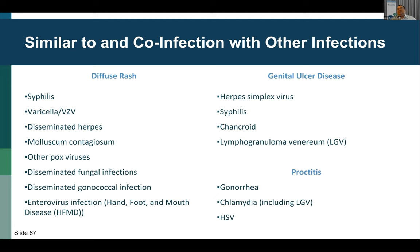Because of these unique and severe presentations, we have to carefully consider our differential diagnosis. For patients with a diffuse rash, it can look like syphilis, disseminated herpes, varicella, molluscum, disseminated gonorrhea, as well as enteroviral infections. For genital ulcer disease, consider herpes, syphilis, chancroid, and LGV. For proctitis, the differential includes herpes, gonorrhea, chlamydia, and syphilis. Many presentations overlap with sexually transmitted infections, so you need comprehensive STI testing in patients you're considering for human monkeypox virus. Not only is it on the differential, but patients can be co-infected with both human monkeypox virus and STIs concurrently.